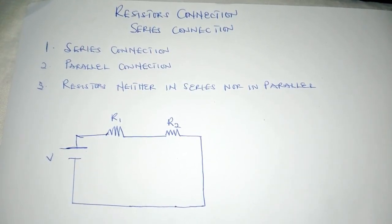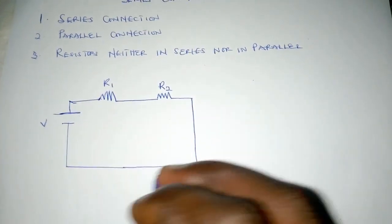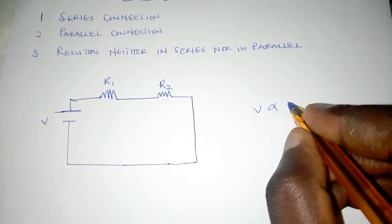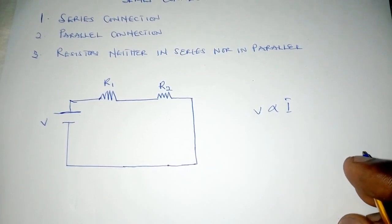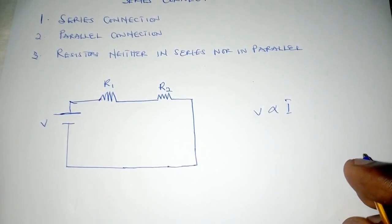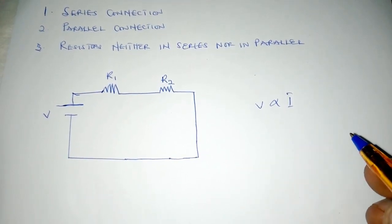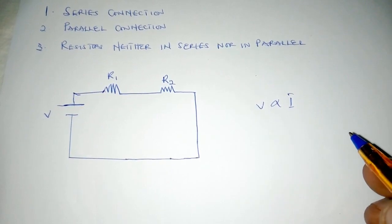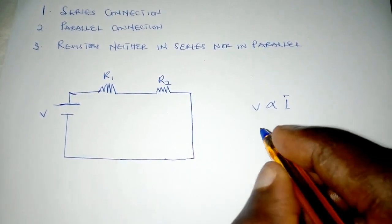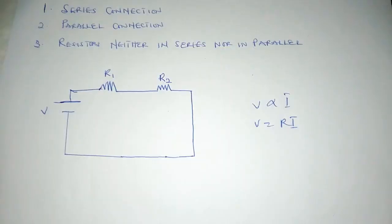And mathematically, we have V to be proportional to I. In other words, you introduce a constant, and that constant is what we call the resistance of that material, which is R.